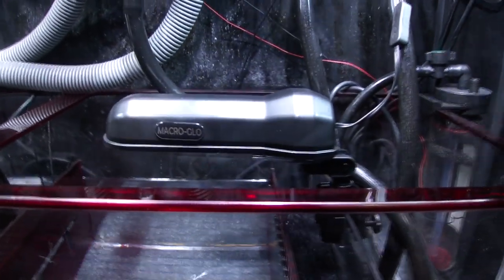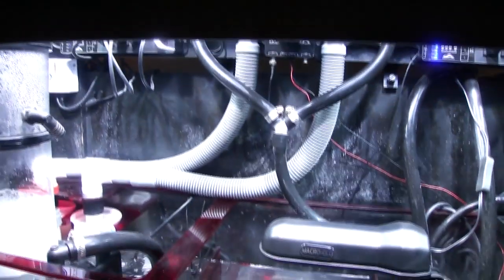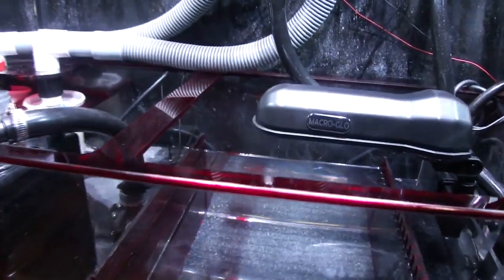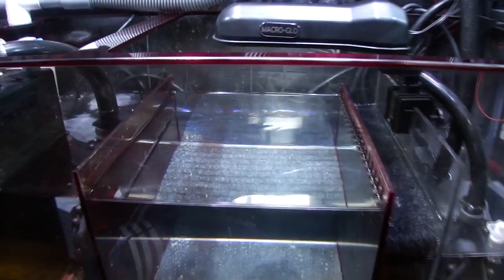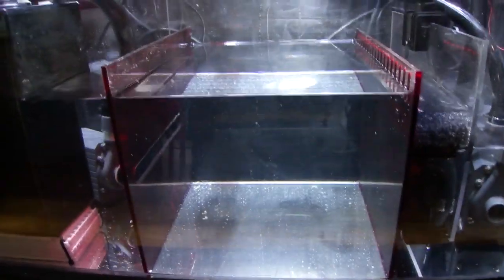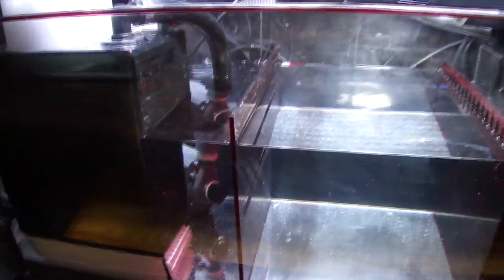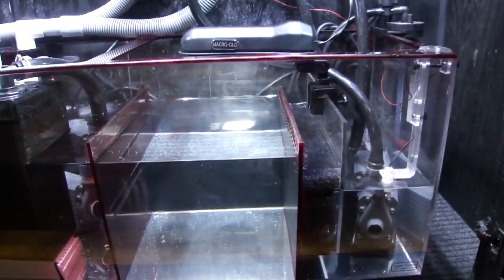Some new features added here are this Macro Glow refugium lighting. I'm gonna turn it on here so you can see the differences. The only lighting on right now is my 10,000K metal halides. You can see there's no actinic on and there is a blue hue to the overall water. But when we come closer and turn on the refugium light, you're gonna see there is a different yellowing color.